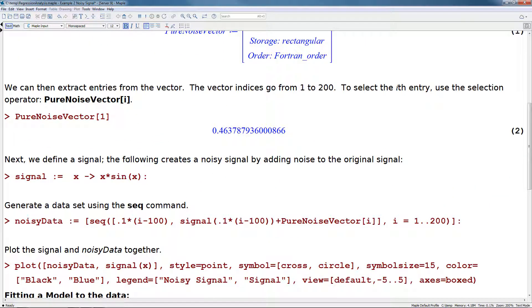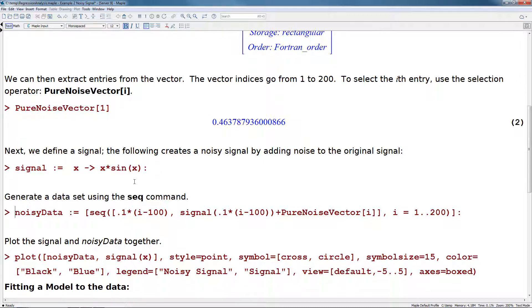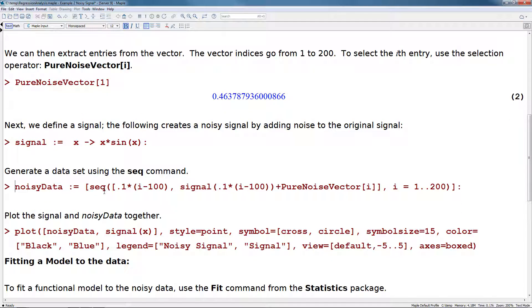Next, we define a signal. The following creates a noisy signal by adding noise to the original signal. So we start with a signal. Here, x maps onto x times sine of x. Then we generate the data set using the sequence command. So here we're generating a sequence of values which include this signal plus the pure noise vector.